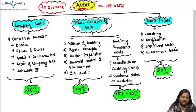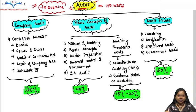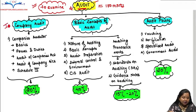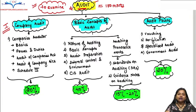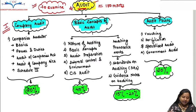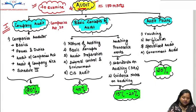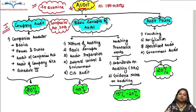Audit, which means to examine, is a 100-mark subject divided into four parts in your course. The first part is Company Audit, where the audit of a separate legal entity – a company – is discussed: how, when, by whom it is to be done. In company audit we have to study the entire Companies Act 2013. Those who are studying law will find many common provisions here.